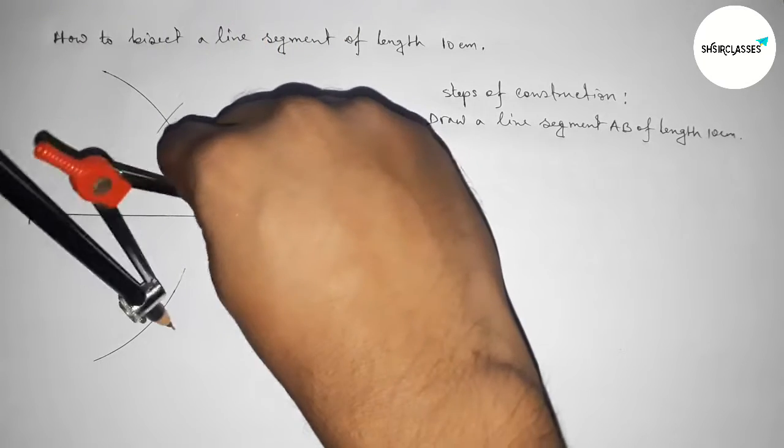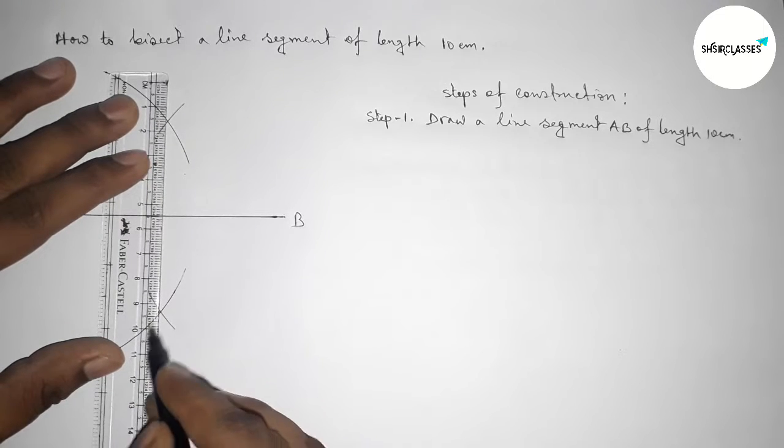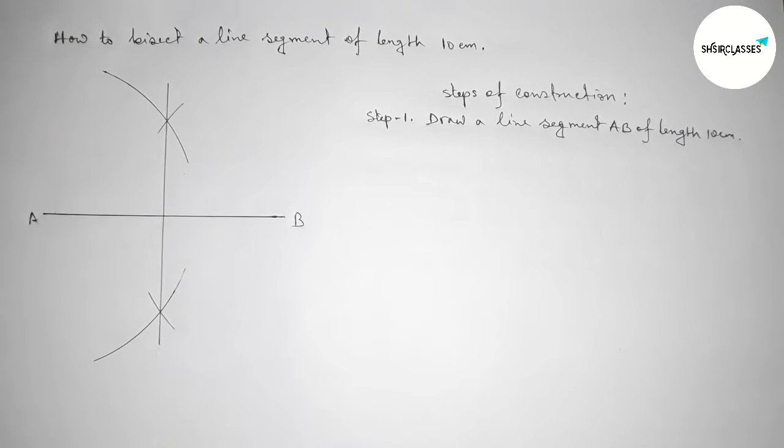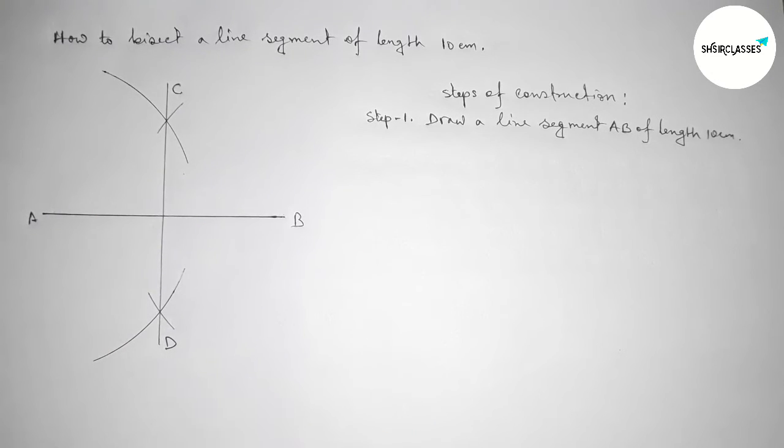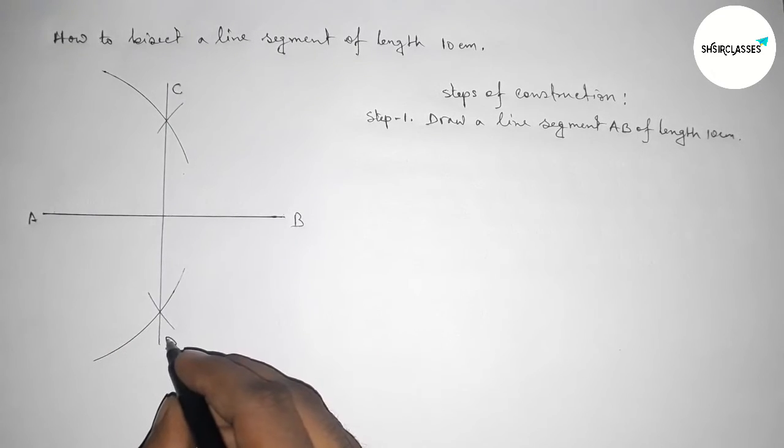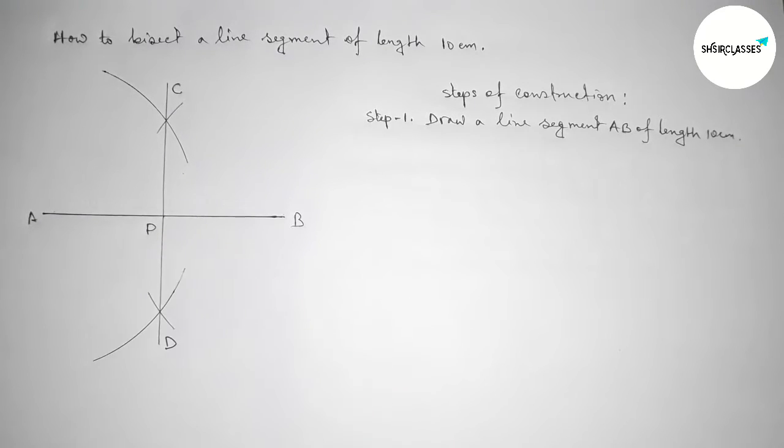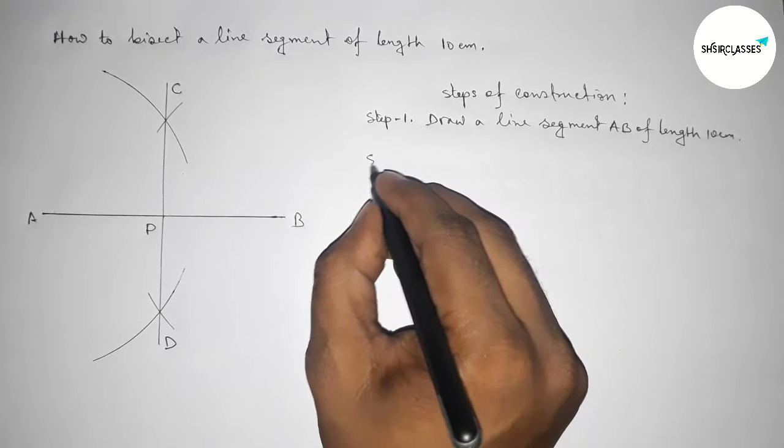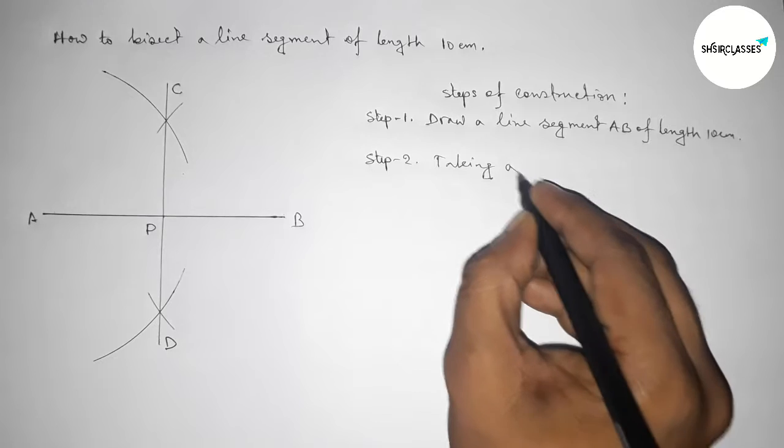So now joining this line, taking point here C and here D. The line CD bisects the line AB here at the point P. Now step number two.